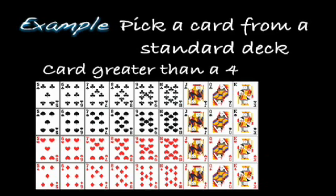We have assumed that the ace is considered to be a low card, meaning the ace is smaller than a 2, so it won't be on this list. This is a list of cards that are greater than 4.